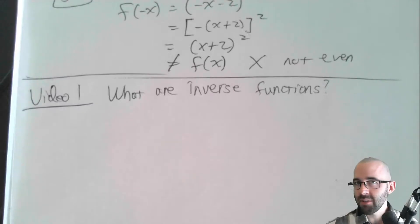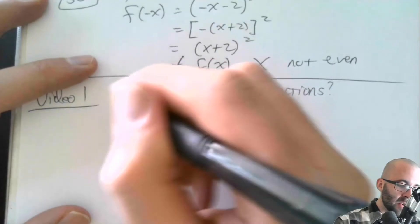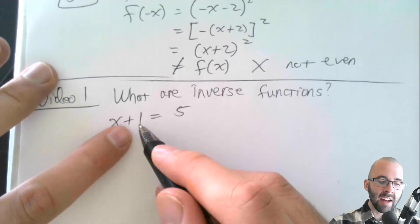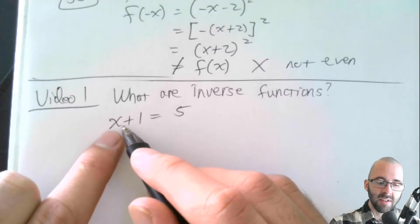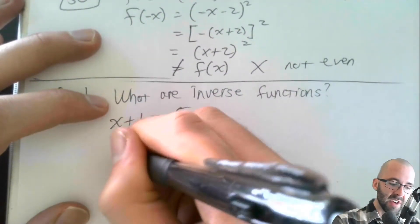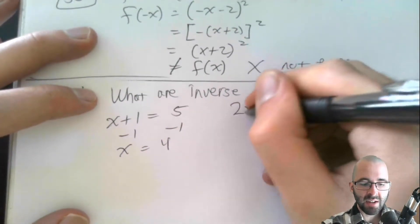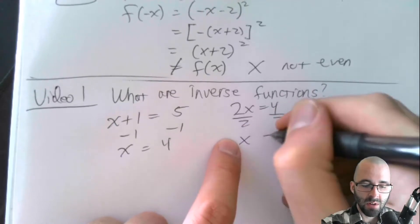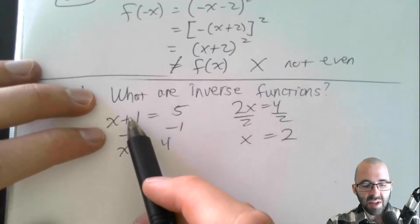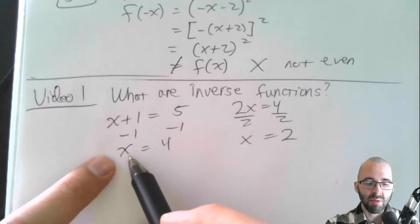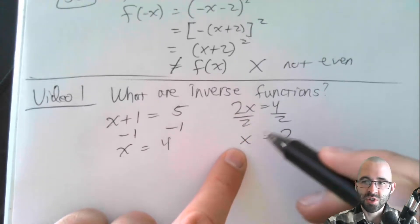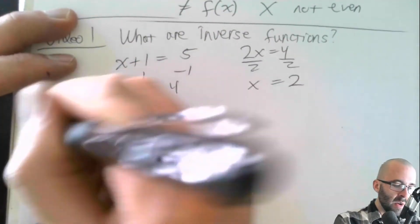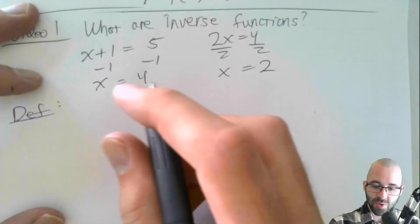You've already been doing inverse functions for a while. If you're solving something like x plus 1, you undo adding 1 by subtracting from both sides. Or if you have 2x = 4, x is getting multiplied by 2, so you divide both sides by 2. Something is happening, you undo that thing, and you're just left with x. In a nutshell, that's what inverse functions are.